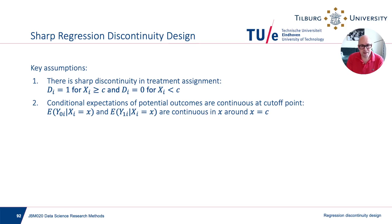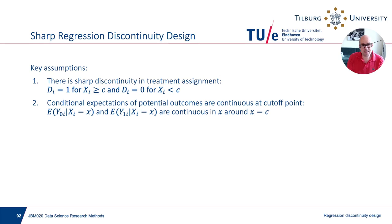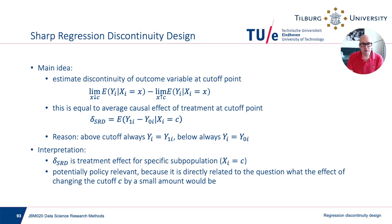The continuity assumption means there is no jump in the expectation of y1i or y0i to the left and right of the cutoff — neither of them jumps. The only thing changing is which one we observe as we move from one side of the cutoff to the other. Once you're in such a situation, you can estimate the size of the discontinuity of the outcome variable at the cutoff point.